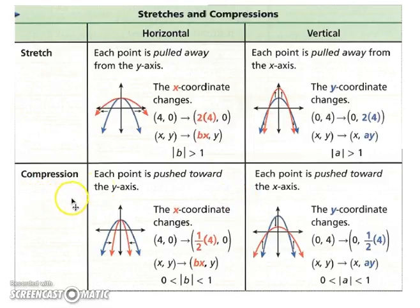For compressions, each point is pushed toward the y-axis. Now, for this to happen, the value that you're multiplying by has to be between 0 and 1, for both horizontal and vertical. It has to be between 0 and 1. So, when you compress the graph, notice how your red graph is closer to the y-axis here. And notice how your red graph is closer to your x-axis for a vertical compression. Let's put this to practice.